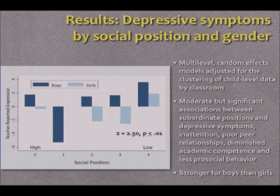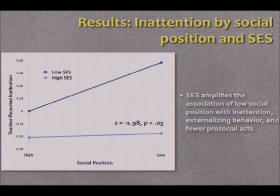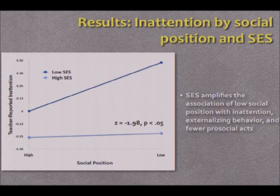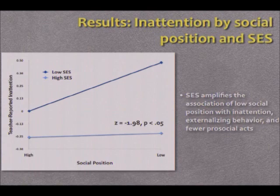The effect was stronger for boys than girls, but the general trend was that children occupying higher social positions within the peer hierarchy had lower levels of all these pre-syndromal behavioral maladaptive symptoms. We also found that family socioeconomic status amplifies the association of low social position with inattention, externalizing behavior, and few pro-social acts. The children with the highest levels of maladaptive behaviors were those who occupied subordinate positions in the kindergarten hierarchy and came from low SES families — an amplification of effect based on social position both within the classroom and within the community.